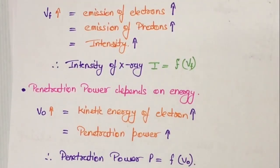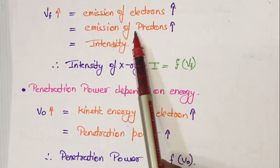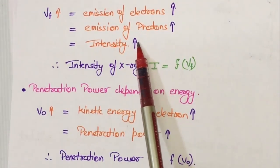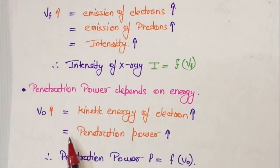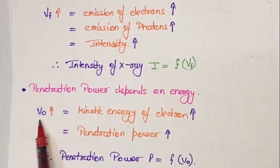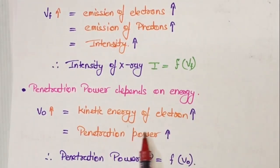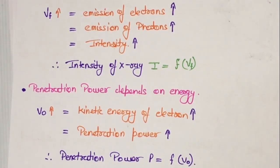When we increase the filament voltage V_F, electron emission increases, photon emission increases, and so the intensity of X-rays increases. Therefore intensity is a function of V_F. The second parameter is penetrating power, which depends on energy. When the accelerating voltage V₀ is increased, the kinetic energy of electrons increases, so penetrating power increases — penetrating power P is a function of V₀. If the penetrating power is high, it is hard X-rays; soft X-rays have low penetrating power and low intensity.